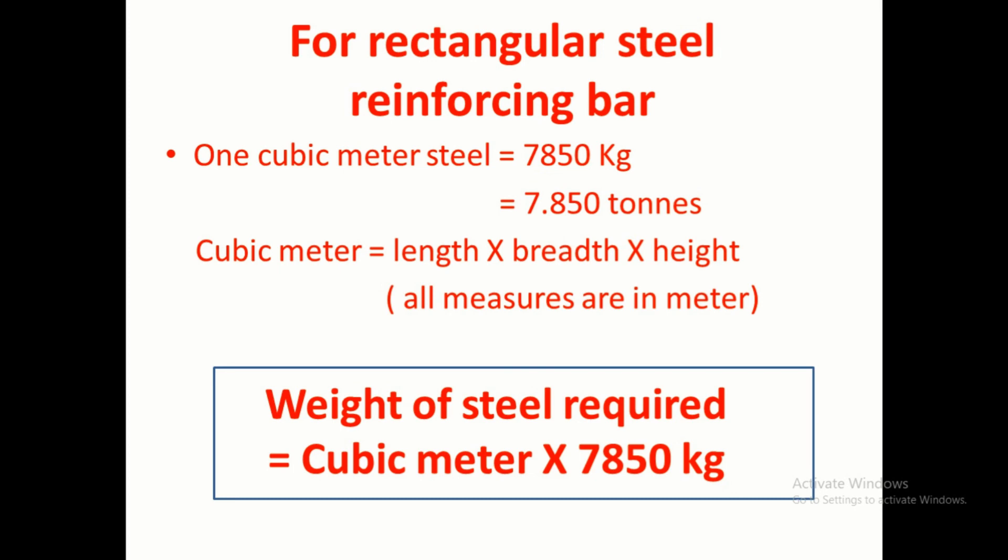Suppose now if the reinforcing bar which is used in construction is not circular, it is rectangular in shape or it is square in shape. It will have some length, some width, and some height. Therefore one cubic meter steel is equal to 7850 kg, that is equal to 7.850 tonnes.